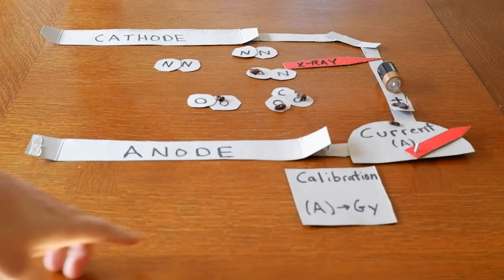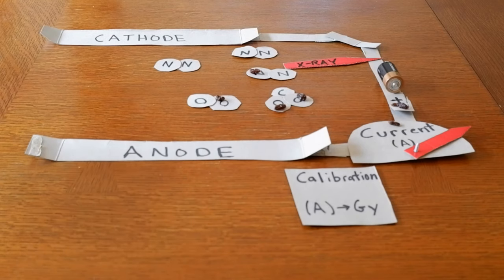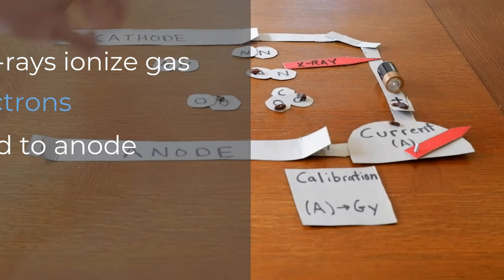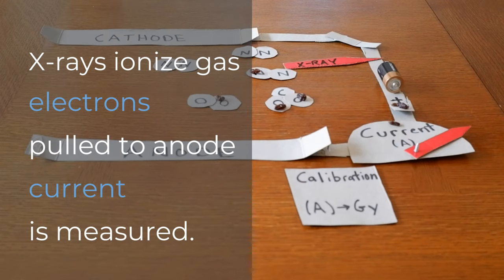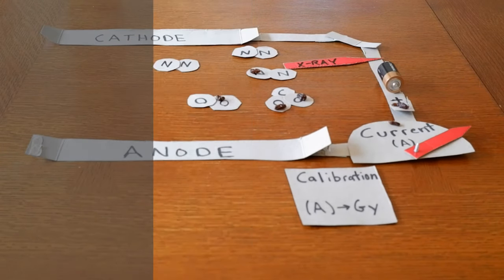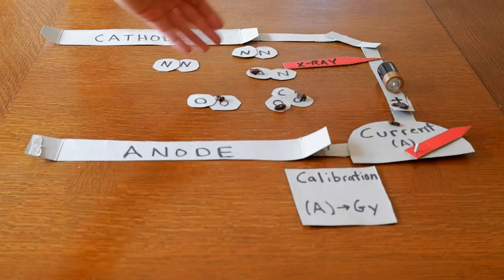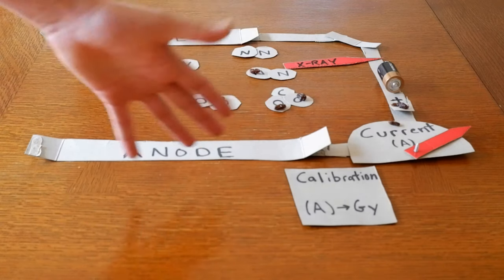We're using milligray typically in CT dosimetry because we're looking at values that are much less than one gray. But that's the general idea: we're just using x-ray interactions inside of air or some other gas in order to make a measurement. The more x-rays that you have coming, the more interactions you're going to have.